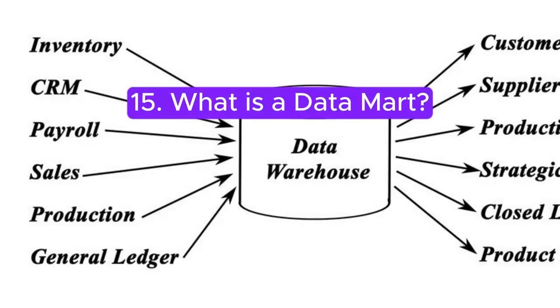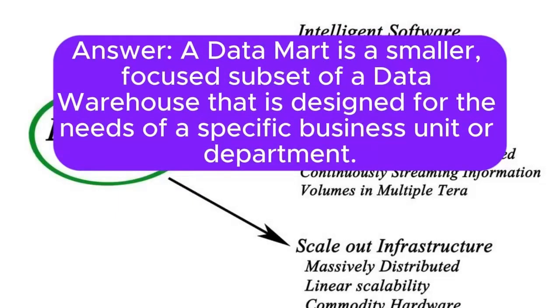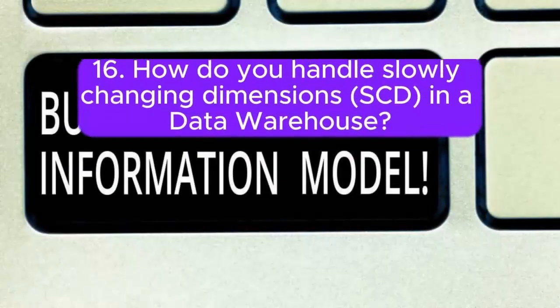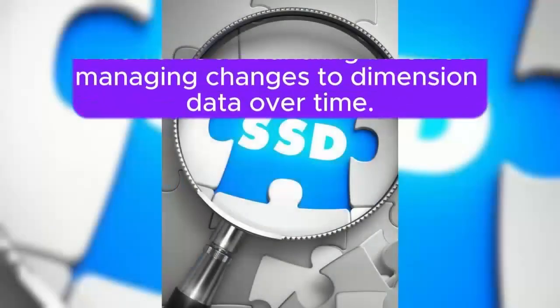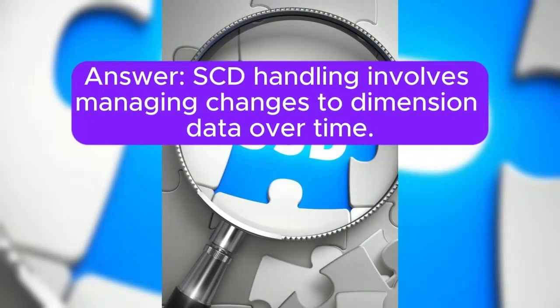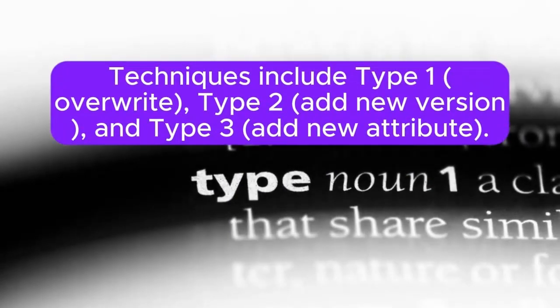15. What is a data mart? Answer: A data mart is a smaller, focused subset of a data warehouse that is designed for the needs of a specific business unit or department. 16. How do you handle slowly changing dimensions (SCD) in a data warehouse? Answer: SCD handling involves managing changes to dimension data over time. Techniques include Type 1 (overwrite), Type 2 (add new version), and Type 3 (add new attribute).